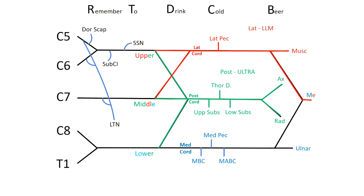For the lateral cord, which is labeled in red, it's LLM, which is lateral pectoral, lateral head of median nerve, and musculocutaneous nerve. For the medial cord,